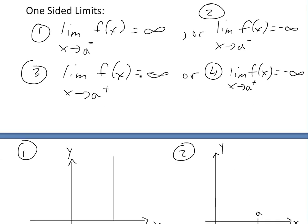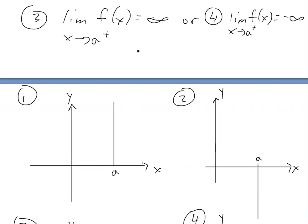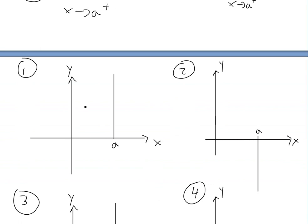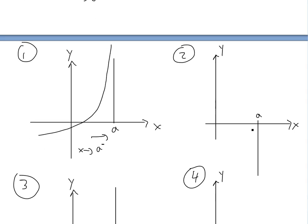If we draw these one-sided limits right here, we'll have something like this one for case one, where we're approaching from the negative side or the left side right here. So x is approaching a from this left side, and we'll have something like positive infinity. So that's a one-sided limit.